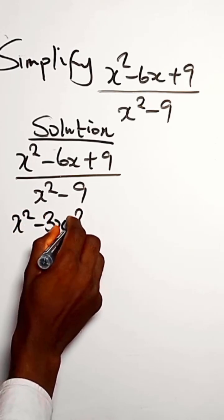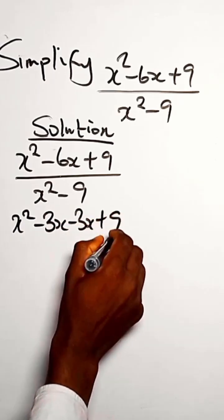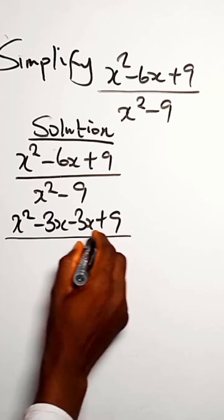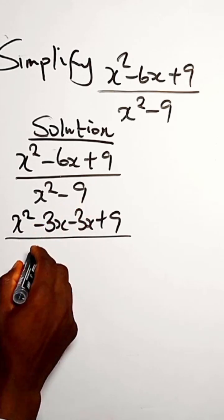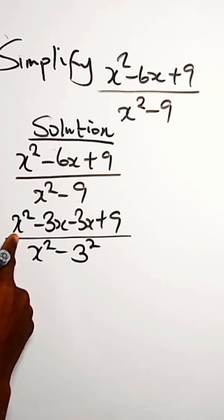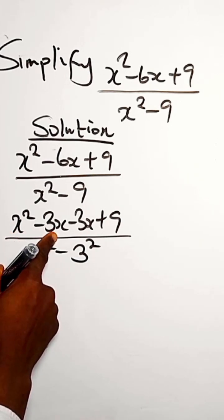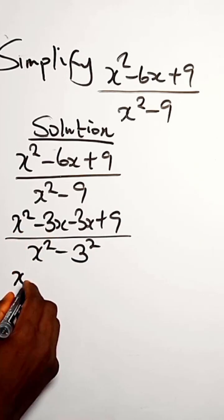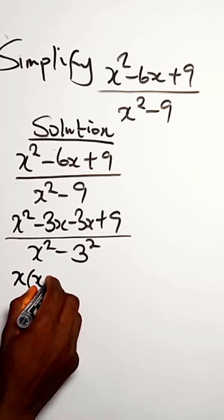So let us go with 3. We have x squared minus 3x minus 3x plus 9. For x squared minus 9, we can write it as x squared minus 3 squared.